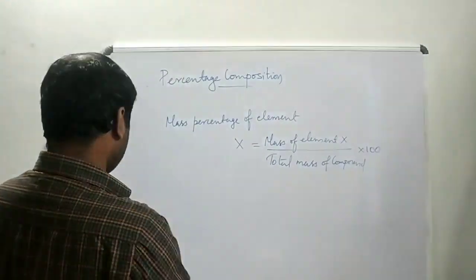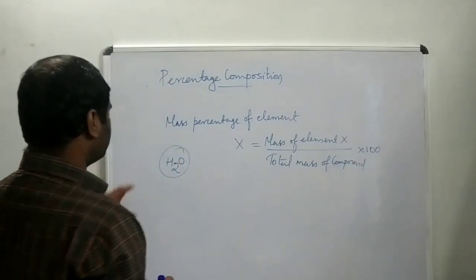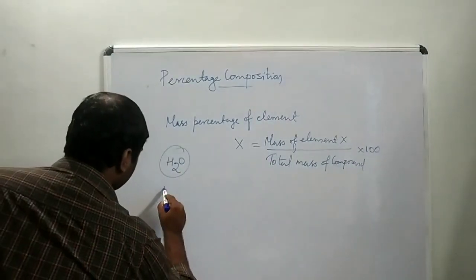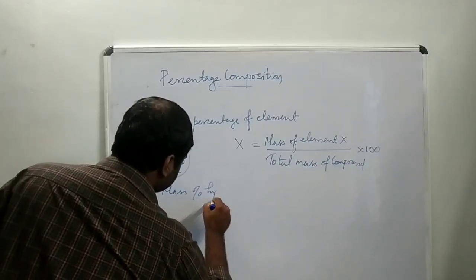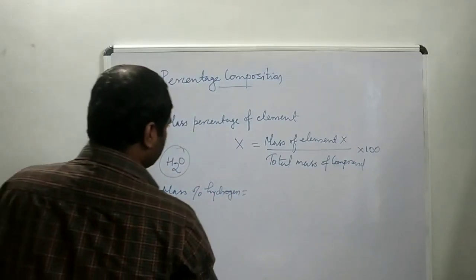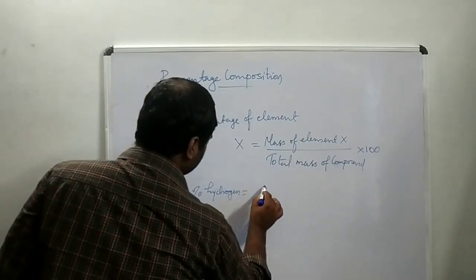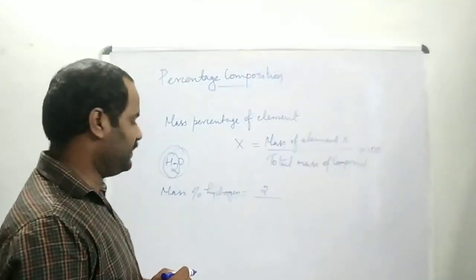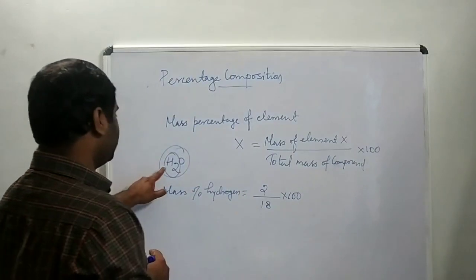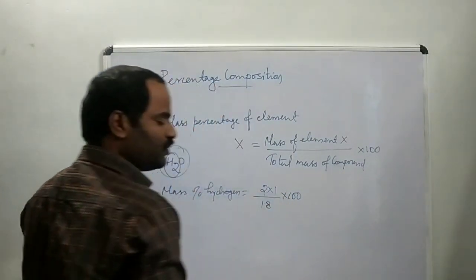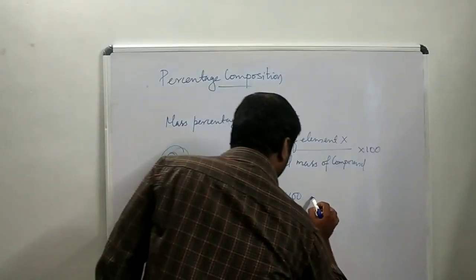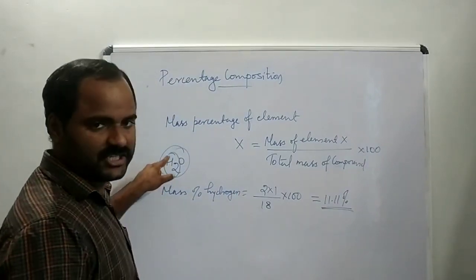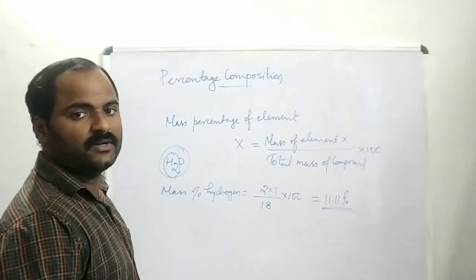Here we take the example of water. We can find out the mass percentage of hydrogen as well as oxygen. Mass percentage of hydrogen equals mass of hydrogen, which is 2 × 1 = 2, divided by molecular mass of water, which is 18, multiplied by 100. That gives 11.11 percentage — this is the percentage of hydrogen in water.